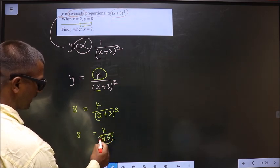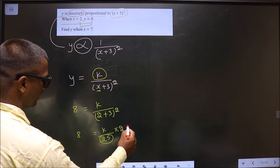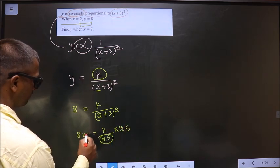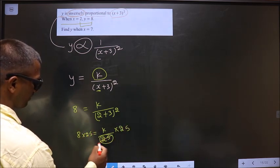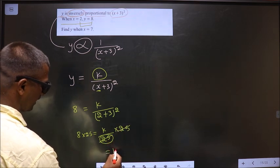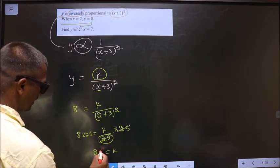To get k, I should get rid of this 25. For that, multiply by 25 on both sides. So this cancels out, I get k equal to 8 into 25 is 200.